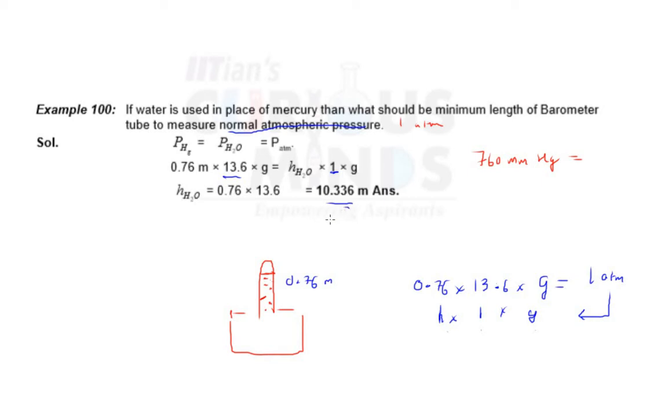So this is the equation basically. So on solving, the height of water is 10.36 meters. So why don't we use water in barometer? Because we cannot maintain this much height, 10.36 meters. It's not a practical apparatus to maintain water which acts against gravity.